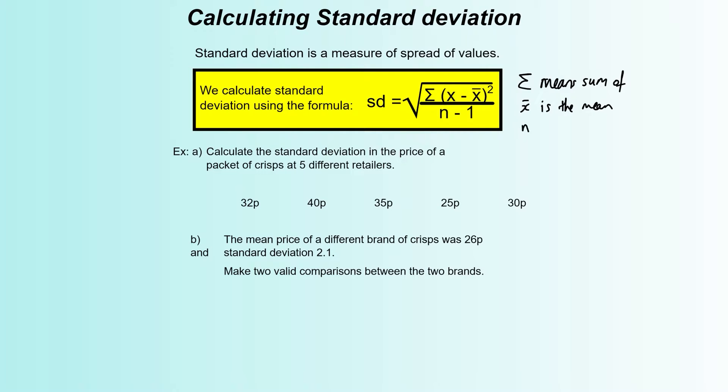So I'll write that as x̄ as the mean. And finally, n is how many numbers you have. So that's the different things that are coming up in this formula. SD just stands for standard deviation. And what we're going to do is look at an example of how that all works together.